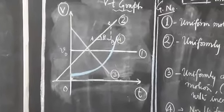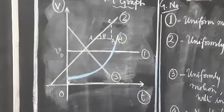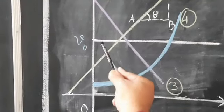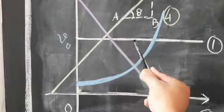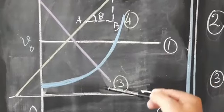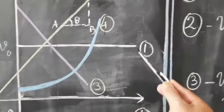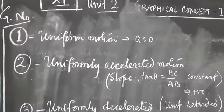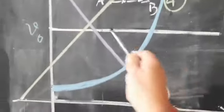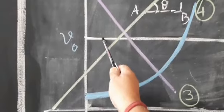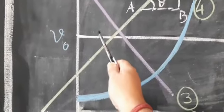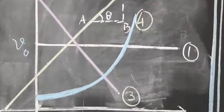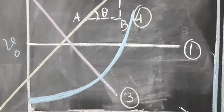Consider the first graph, having the initial velocity V-naught. As time increases, the velocity remains constant. Time is increasing, but velocity does not change. So the nature of graph one is uniform motion, as the acceleration is zero — there is no change in velocity. The object is moving with uniform motion, or uniform velocity.